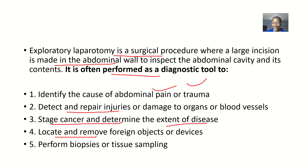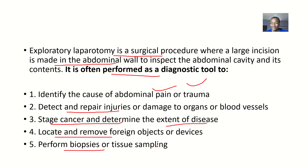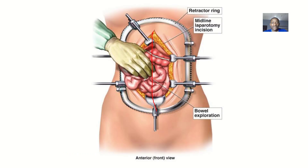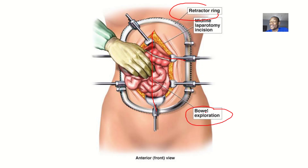It is also performed to locate and remove foreign objects, and to perform biopsies and get tissue samples. This type of surgery is like a blind type of surgery — you don't actually know what is wrong with the patient, so you have to open them up. A retractor ring is placed to hold everything open, because human hands can't hold it. Then you explore — it's like going on an adventure to find anything that is wrong.